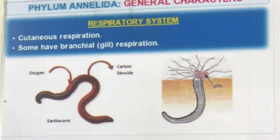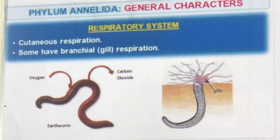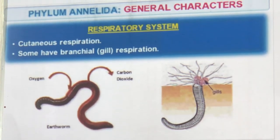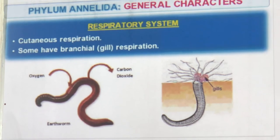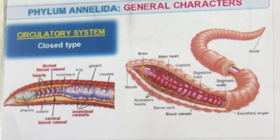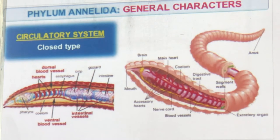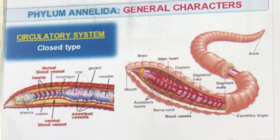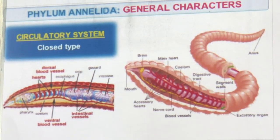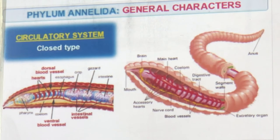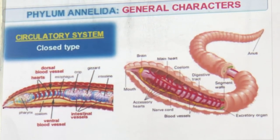Respiration is cutaneous — just passing through the skin. Some also have gills. Circulation is closed type — heart and blood vessels are seen for the first time. The earthworm has multiple hearts. You can see dorsal and ventral blood vessels — like an artery and a vein.